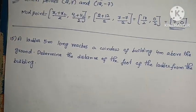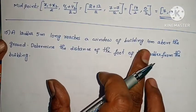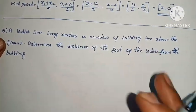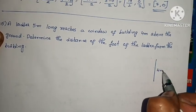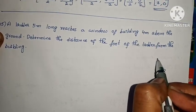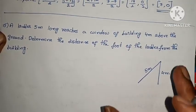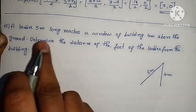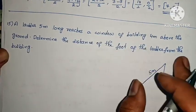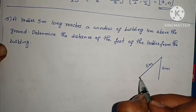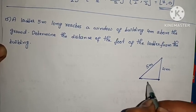Next, 15th question: A ladder 5 meters long reaches a window of a building 4 meters above the ground. Determine the distance of the foot of the ladder from the building. Let the distance be x. We have a right-angle triangle: the building height is 4 meters and the ladder length is 5 meters.